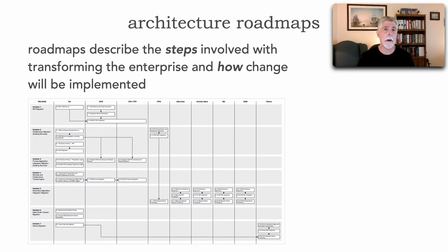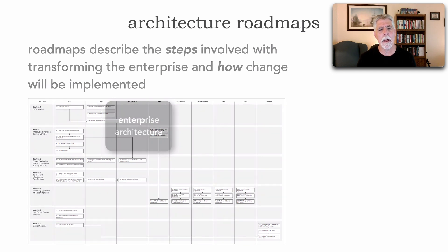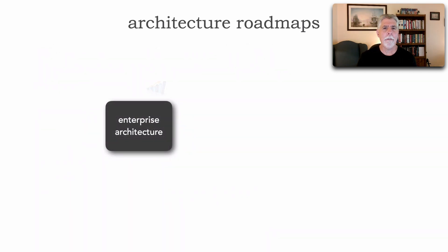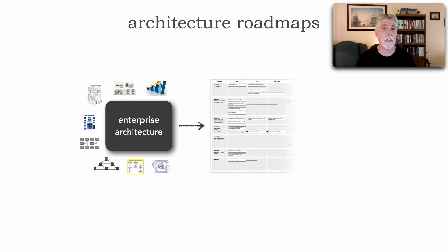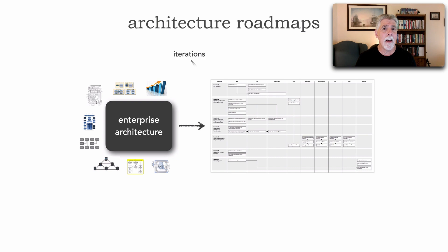When we take a look at an architecture roadmap, a roadmap really describes the steps involved with transforming the enterprise, performing some sort of initiative, and how that change will be implemented. In most enterprise architecture efforts, a lot of modeling goes on — there are frameworks like TOGAF, ZACHMAN, and FEAF — but whatever modeling we do, whatever framework we use, the ultimate outcome of an enterprise architecture effort is to produce this roadmap.